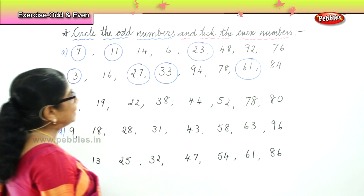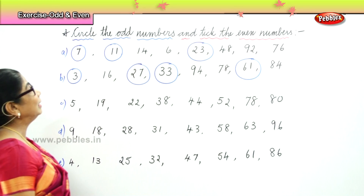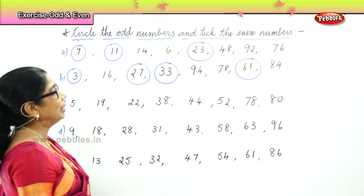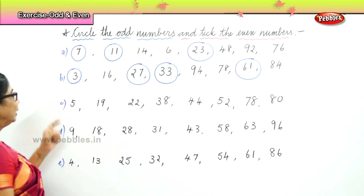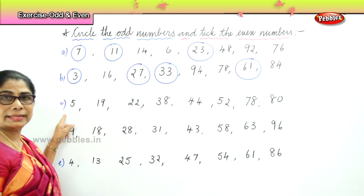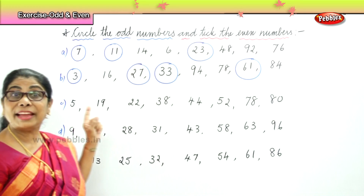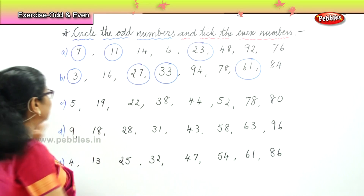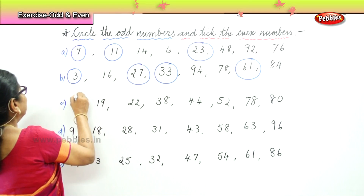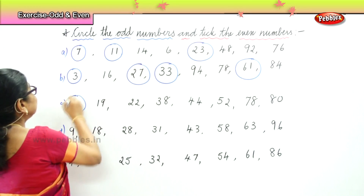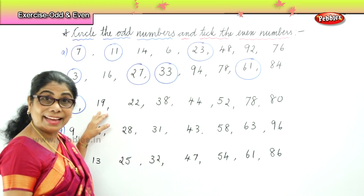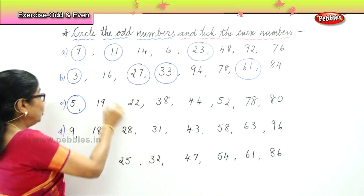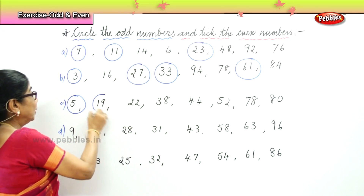So in the second set, we have circled the odd numbers. Now the third set. Number five — good, odd number. Nineteen ends in nine — very good, odd number.